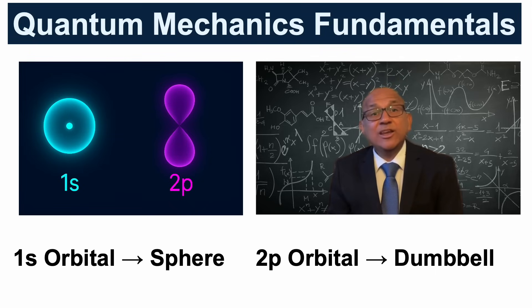The 1s orbital is a spherical cloud of probability. The 2p orbital has a dumbbell shape. These orbitals don't tell us exactly where the electron is, but where it is most likely to be found.